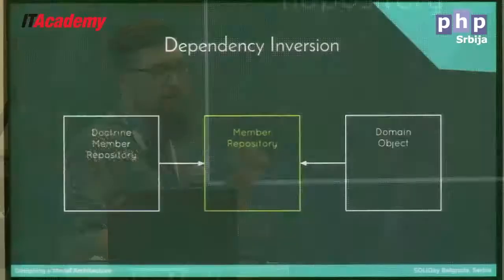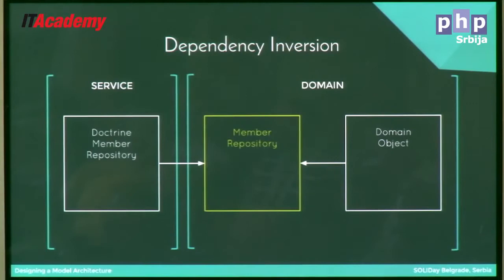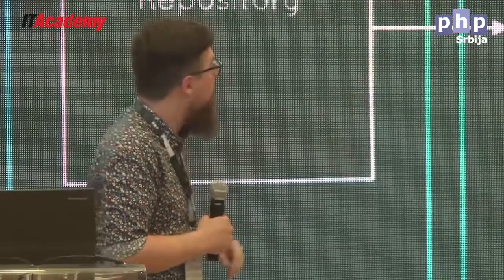So if we look at the direction of dependencies: the doctrine member repository knows about the member repository interface. The member repository interface knows nothing about Doctrine. And a domain layer object can know about the member repository interface without knowing about the implementation. This is called dependency inversion — the idea that you can put an interface here and flip the direction of dependency against the direction of the control flow. This allows domain objects to consume something that has to do with a database without pushing knowledge back over the domain barrier.